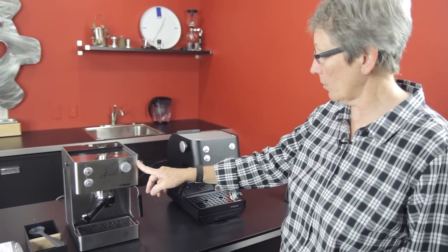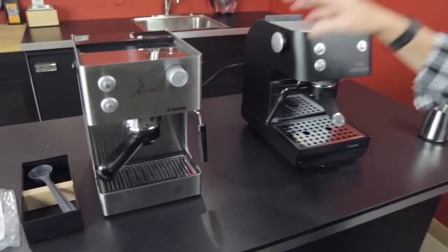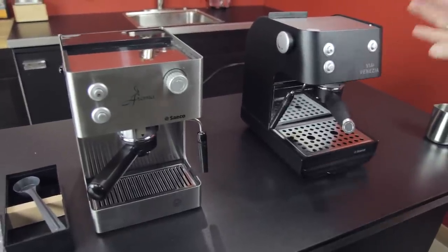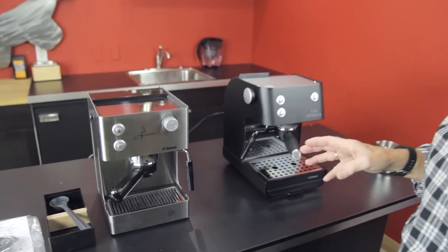The casing, as you can see on the Aroma, this is one of the smallest machines out there. It is extremely small. The Via Venezia, just a little bit bigger, has a few different features. I'll go over the basic features.